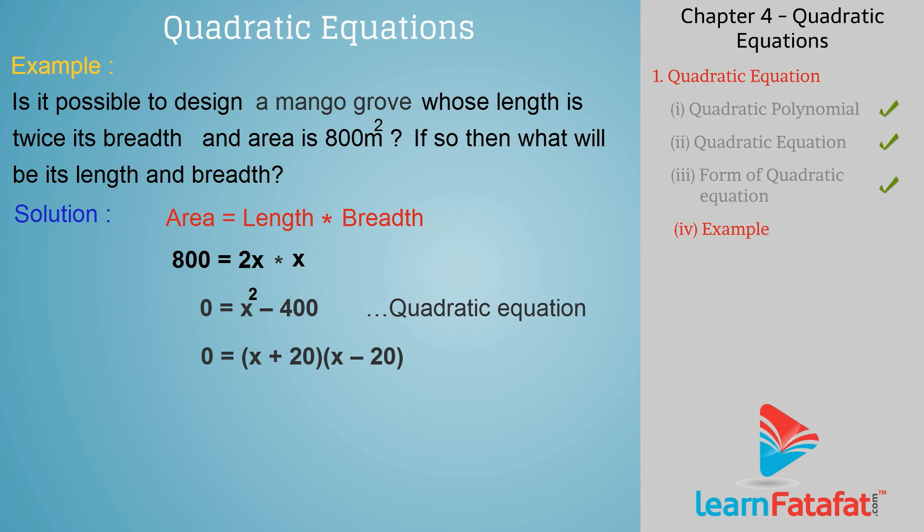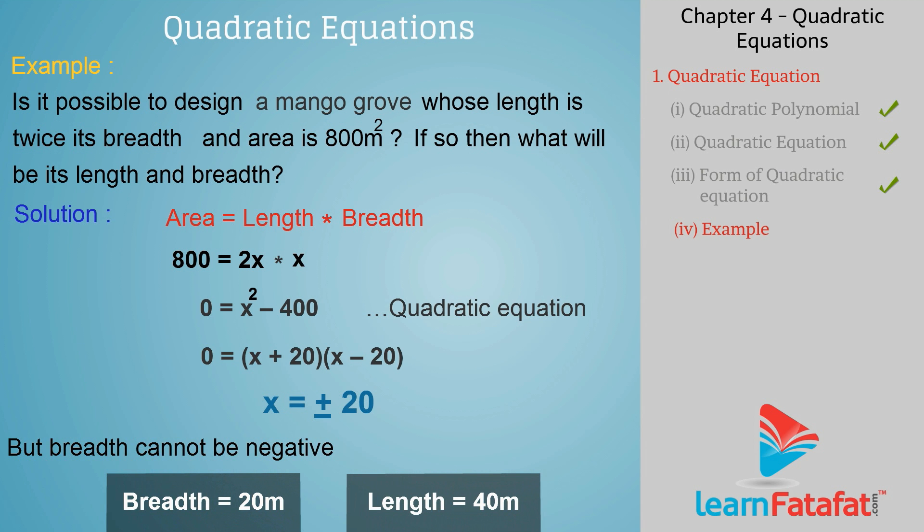Solving it further, we get x = ±20, but breadth cannot be negative. Hence, we get breadth = 20 meter and length = 40 meter.